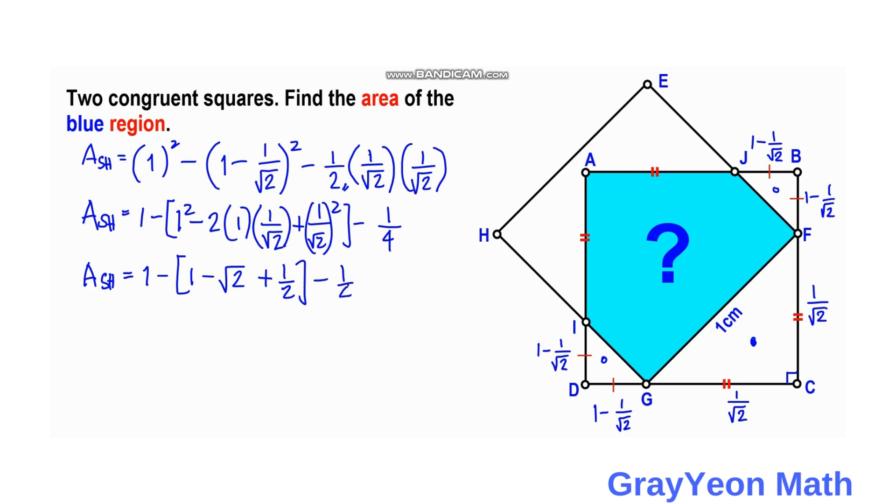Minus 1 fourth. So we distribute this negative sign. So area of the shaded is equal to 1 minus 1 plus square root of 2, minus 1 half, minus 1 half, then minus 1 fourth.